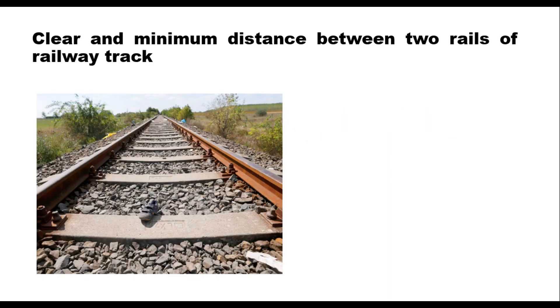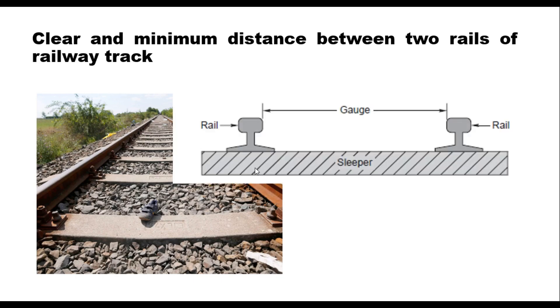Hello friends, today we will discuss gauge of a railway track. The gauge of a railway track is the clear distance between inner or running faces of two track rails. This is the track and this is the running face of the rail, and therefore the gauge is defined as the clear distance between running faces of two rails of the track.